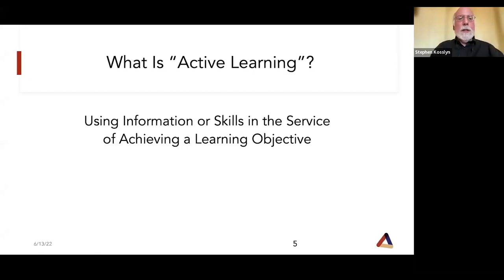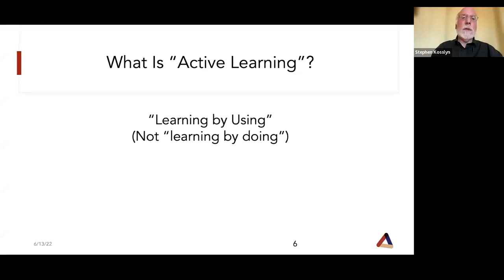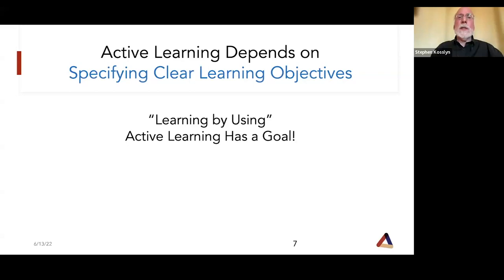So, what is active learning? The way I think of it, it's using information or skills in the service of achieving a learning objective. It's doing something with information or skills for a purpose. Learning by using is not the same as learning by doing. Inquiry learning and problem-based learning have turned out to have a mixed track record. Without having a clear purpose, it doesn't turn out to work as well. Active learning depends on specifying clear learning objectives.